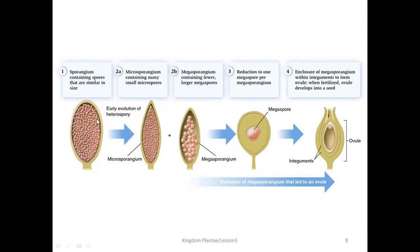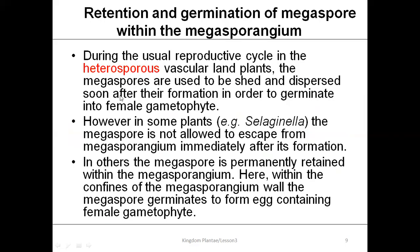In homospory there are same types of spores; in heterospory there are two types — megaspores fewer in number and larger in size, microspores larger in number and smaller in size. The key advance was reduction to one functional megaspore and closure of the megasporangium within the integuments to form the ovule. When fertilized, the ovule becomes the seed.